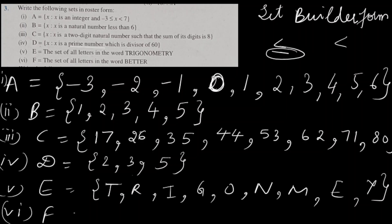The sixth one is set F — the set of all letters in the word 'better'. We write B, E, T — then T is repeated so we skip it. E is also repeated so we skip it. Then R. So the set is {B, E, T, R}. Any element which is repeated is written only once. With this, question number 3 is complete.